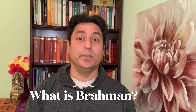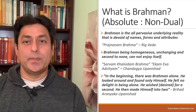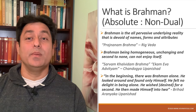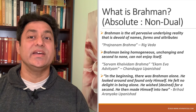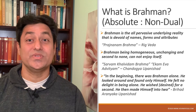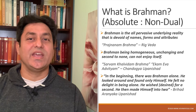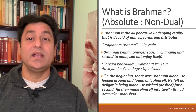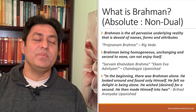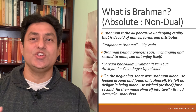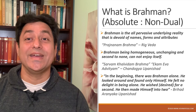The first one is Brahman or Brahma. It is a non-dual state of Supreme from which manifestation comes into duality — this is the highest principle. Rig Veda says 'Pragya Nama Brahma,' meaning Brahma is the all-pervasive underlying reality that is devoid of names, forms and attributes. In Upanishad it says 'Sarva Makhala Vidam Brahma Ekam Eva Advitiam,' meaning Brahman is homogeneous, unchanging and second to none. So it cannot enjoy itself.